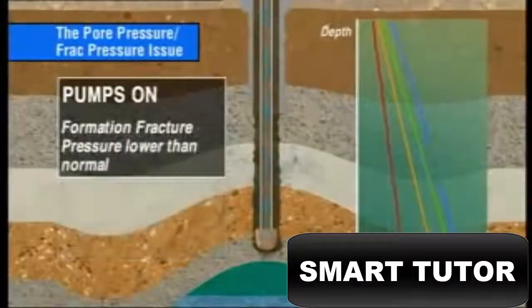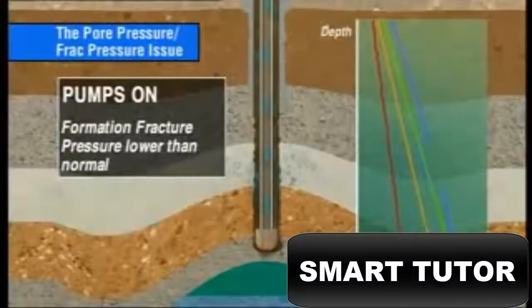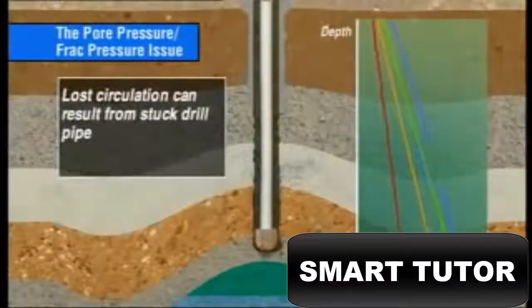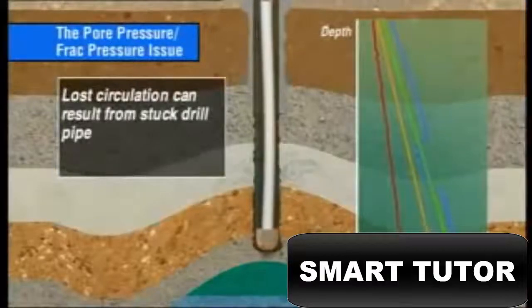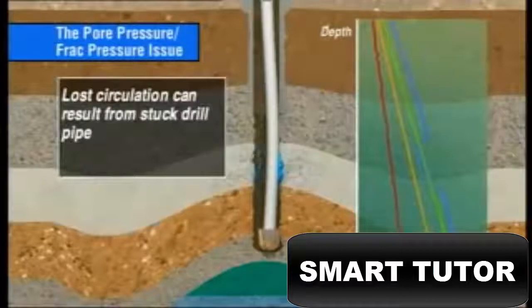When the formation fracture pressure is lower than normal, a fracture may be induced when the pumps are on, creating partial or even total fluid losses. Lost circulation can result in stuck drill pipe, the flow of fluid into the formation pushing the drill pipe into the side of the well bore, or from the build up of uncirculated well bore solids.